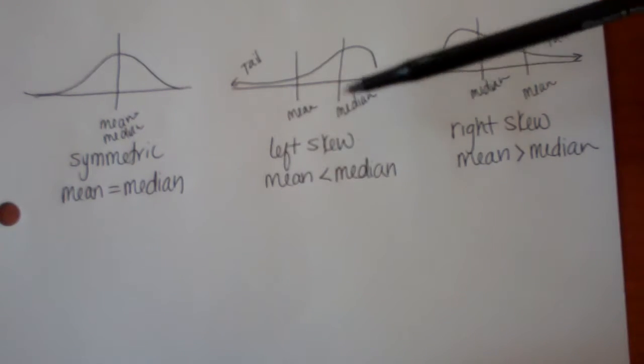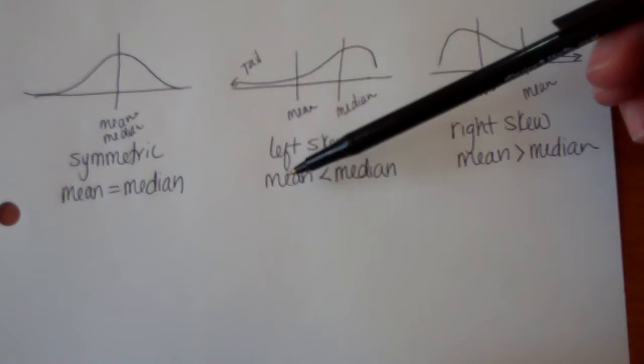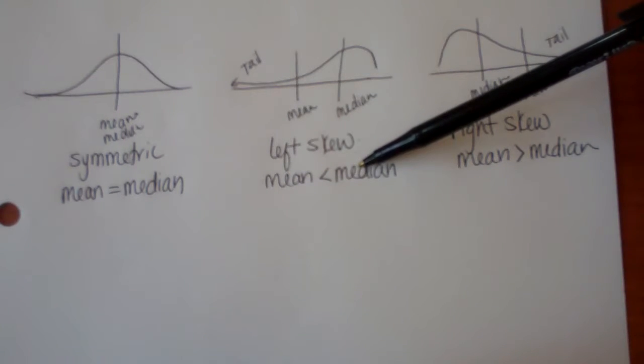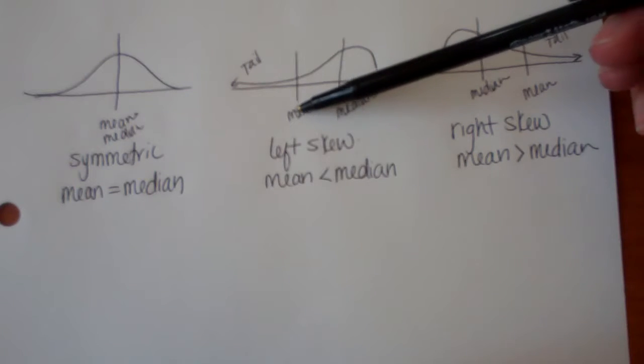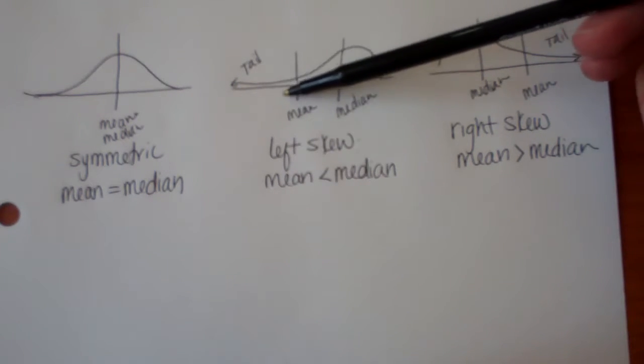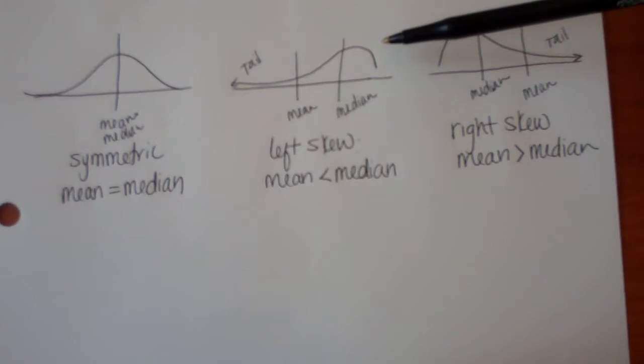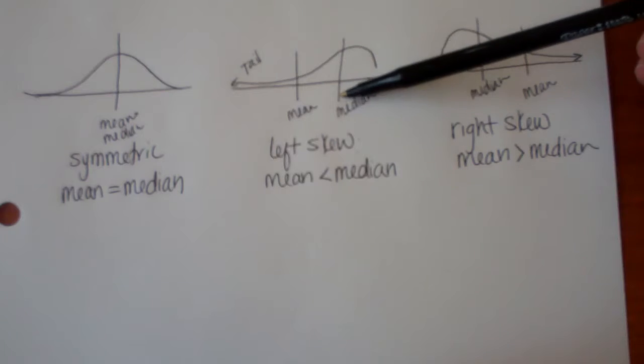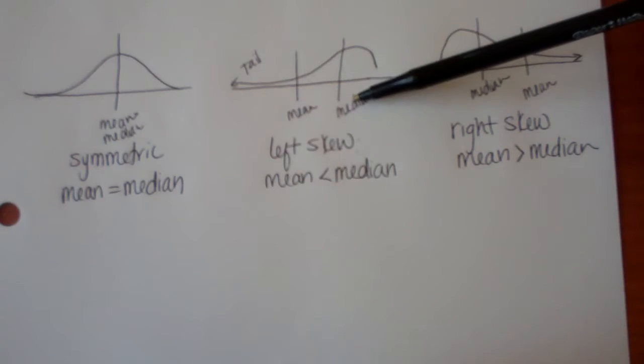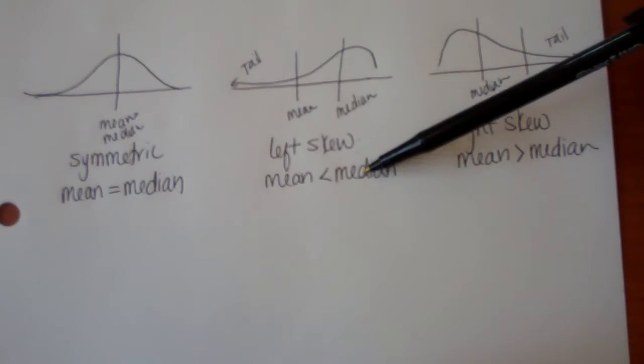If it's left skew, our tail is pointed to the left and our mean is going to be less than our median. This represents that the mean is getting pulled by any outliers down by the tail. So it chases that tail, it goes where that tail is. The median stays more towards the center of the data, so the median is going to be near the higher numbers. So in left skew, the mean is less than the median.